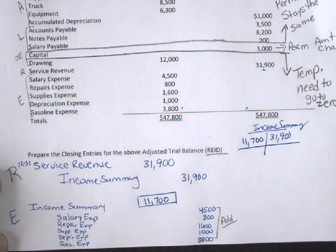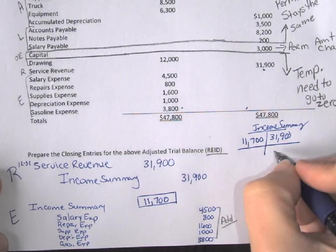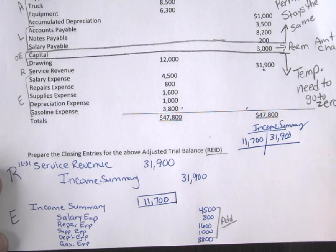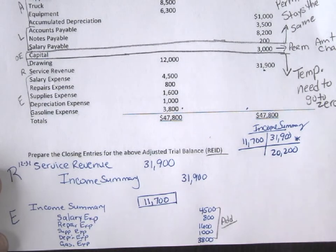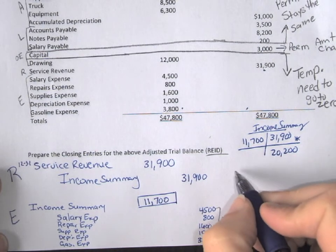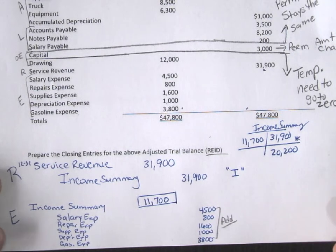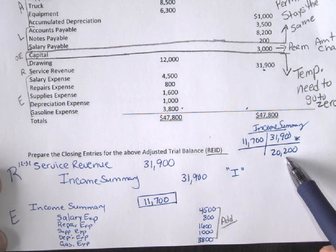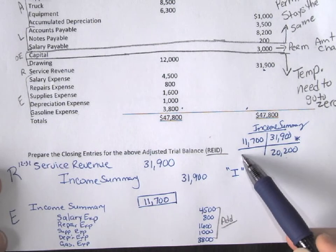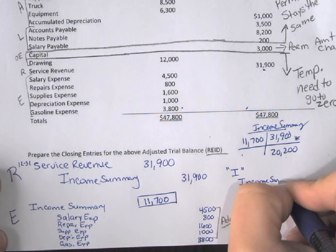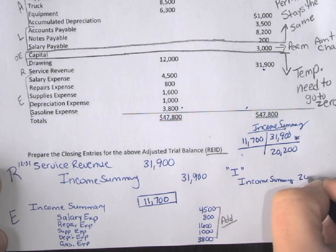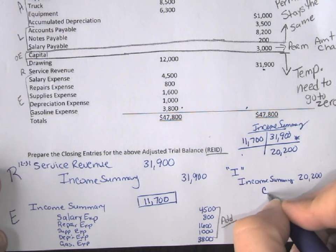Now I need to balance out the income summary T-account. The credit side has $31,900 from revenues and the debit side has $11,700 from expenses, giving a credit balance of $20,200. The next closing entry is I — for income summary. Since income summary has a credit balance of $20,200, I need to debit income summary for $20,200 to zero it out.